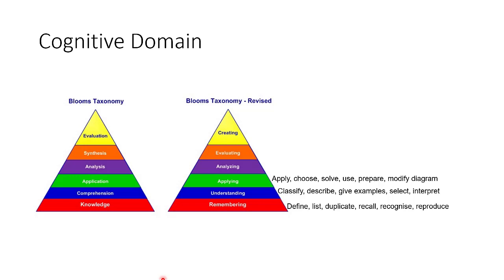When you want the student to be able to apply knowledge, you can use verbs like apply, choose, solve, use, prepare, modify, and diagram. You are giving the student opportunity to apply what he or she has learned. When preparing your content, you will also be looking at learning activities and resources that will give opportunity to the student to do this. Coming to the analyzing level, you can use verbs like contrast, compare, differentiate, examine, illustrate, and apply.